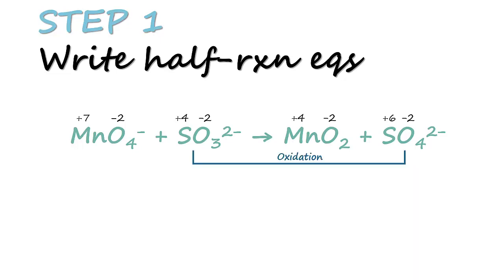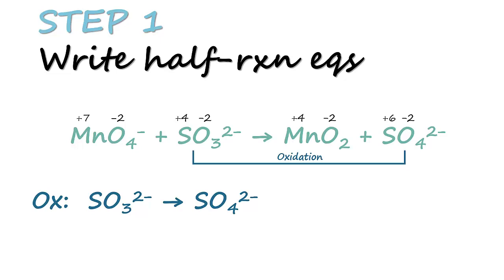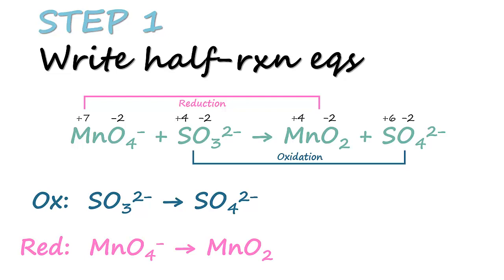SO3²⁻ to SO4²⁻ — the sulfur undergoes oxidation, so that is our oxidation half equation: SO3²⁻ going to SO4²⁻. For reduction, we have MnO4⁻ going to MnO2. It is a reduction because the oxidation number of Mn reduces from +7 to +4. So the reduction equation is MnO4⁻ going to MnO2. We are now done with step 1.